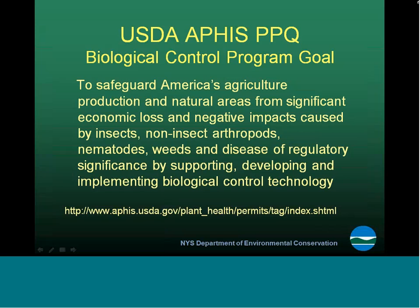At the federal level, USDA APHIS Plant Protection and Quarantine oversees the biological control program. Their goal is to safeguard American agricultural production and natural areas from significant economic loss and negative impacts caused by insects, non-insect arthropods, nematodes, weeds, and diseases of regulatory significance, by supporting, developing, and implementing biological control technology. They have significant information on their website regarding programs they are currently undertaking and research for future projects.